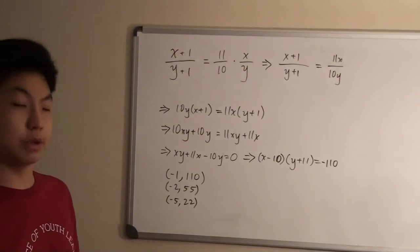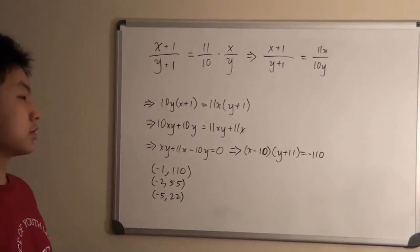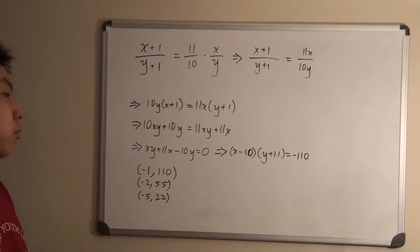Keep in mind, x and y still have to be relatively prime, and they're non-negative. So some of these will—there might be more, but those won't work.